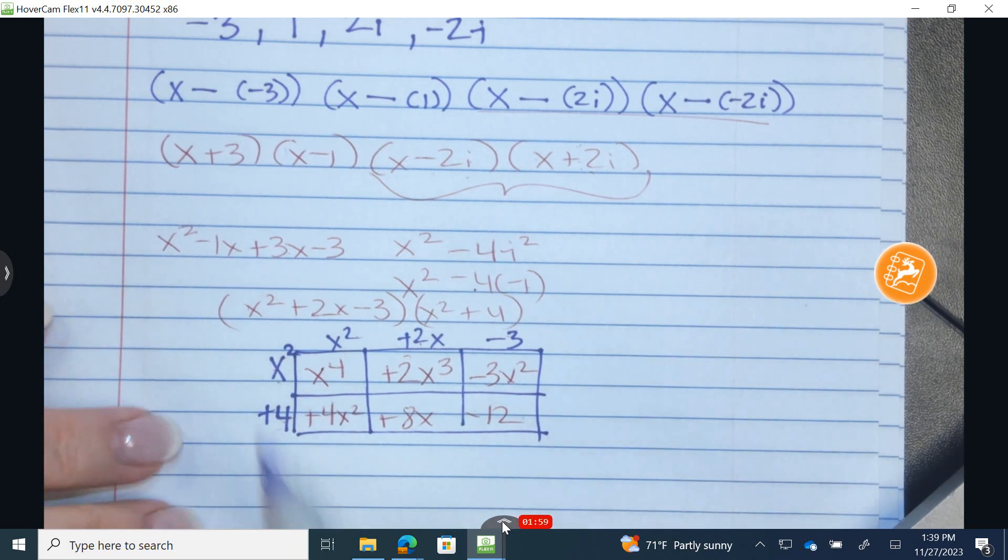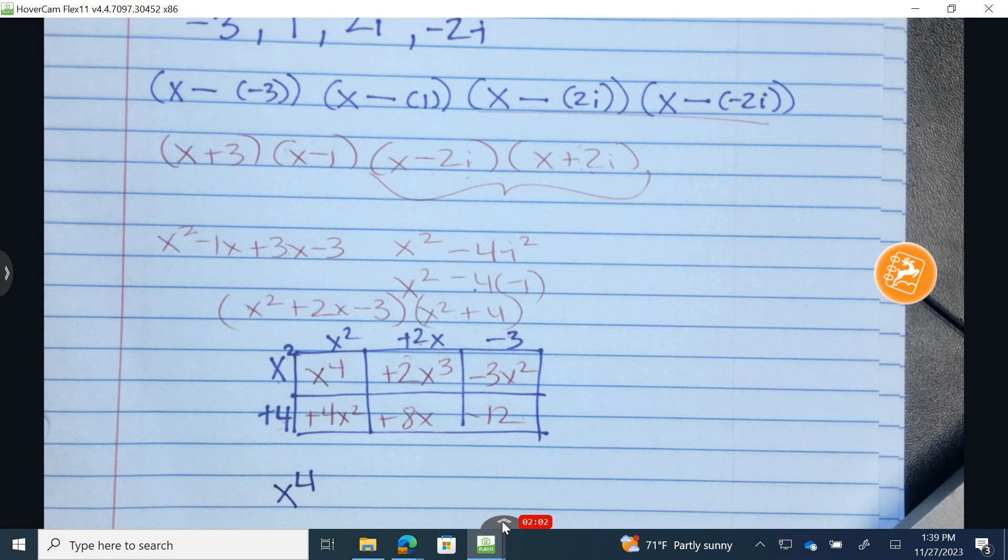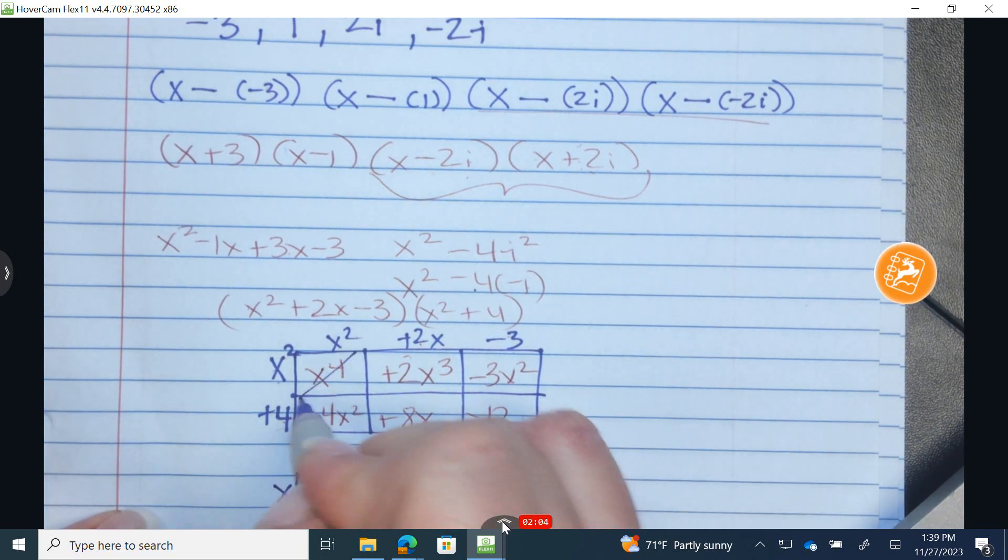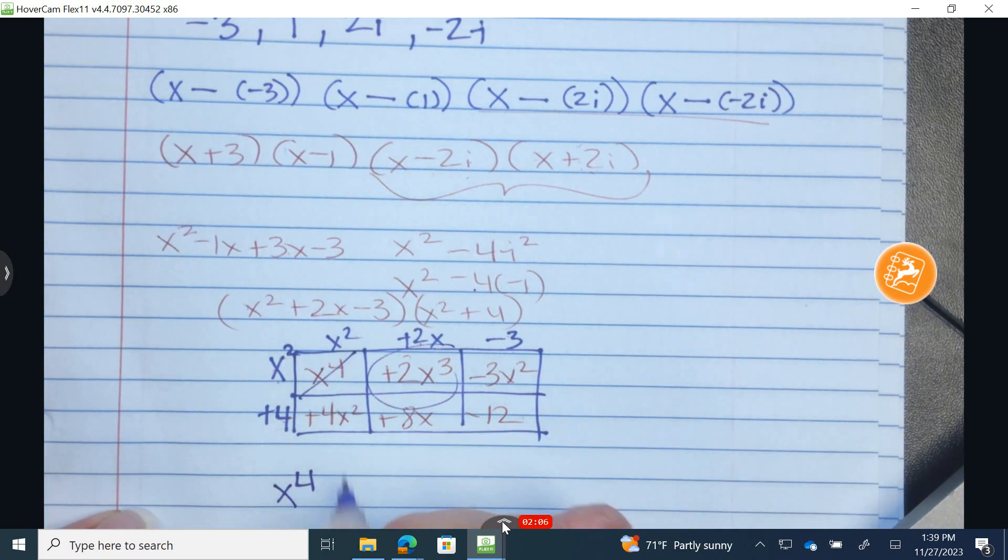Okay, now I'm going to go ahead. There's only one item that is x to the fourth. Now x to the third, there is only one item, so that's positive 2x to the third.